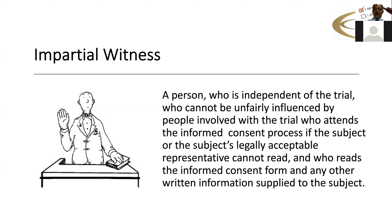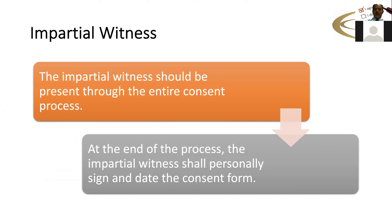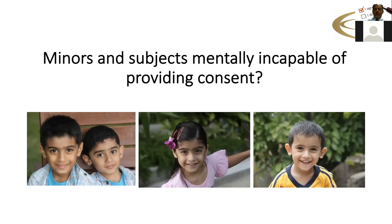The consent is still coming from the subject, not from the impartial witness. The impartial witness signs the consent form, which means the investigator or person obtaining consent actually conveyed what was in the consent form and the patient is giving freely informed consent. The subject, if capable, will sign and date the consent form; if they cannot sign, they will give their thumbprint. Whenever you do this, you document in each subject's medical records who the impartial witness was and how the process was conducted.